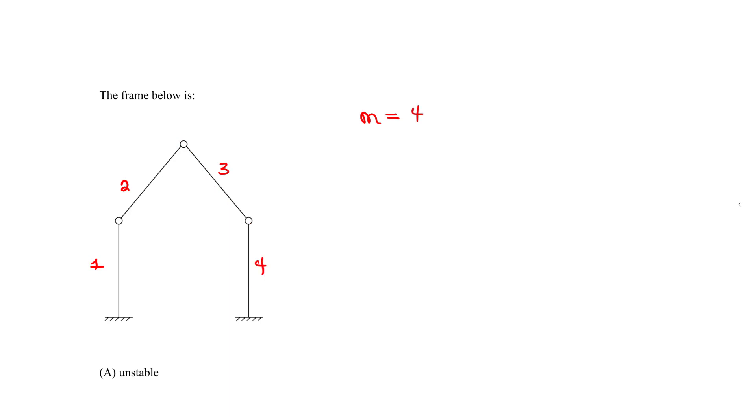Now let's find R. R is going to equal to what? The reactions. It's external reactions. So we have a reaction here, R1. It's a fixed, right? So fixed, we have always three reactions. A reaction in the X, a reaction in the Y, we'll call R2 and a moment, we'll call the moment M3. So we have three here. Then for this fixed end, we know we have R4, R5 that goes up and again, another moment M6. So we have a total of six reactions.